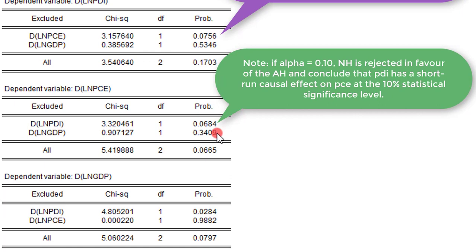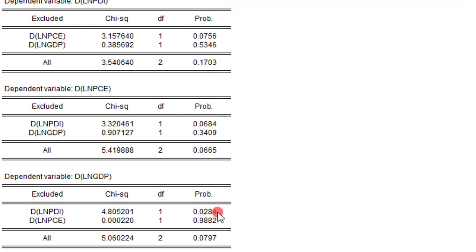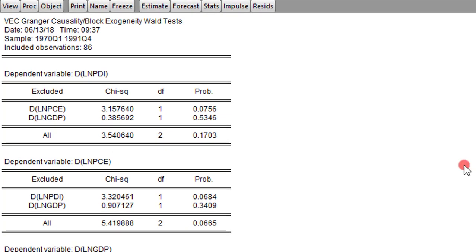Now let's move to the GDP equation. For PDI, we can easily conclude that there is a short-run causal relationship from PDI to GDP. For PCE, there is no short-run causal relationship from PCE to GDP. From the outcome of the VEC Granger causality test, the only significant causal relationship in the short run is from PDI to GDP.